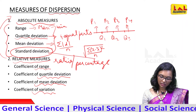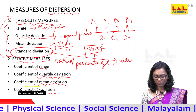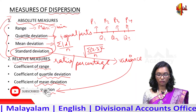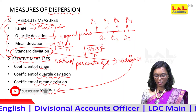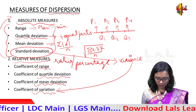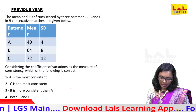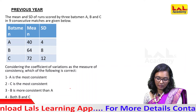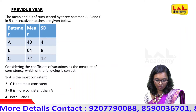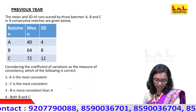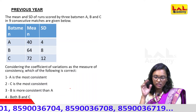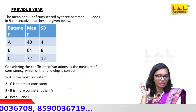Because if we use the standard deviation, we calculate the variance — this variance gives the Coefficient of Variation. The mean and standard deviation of runs scored by three batsmen A, B, and C in nine consecutive matches are given below. Considering the Coefficient of Variation as the measure of consistency, which of the following is correct? So three batsmen A, B, and C have a mean and standard deviation.